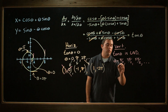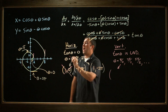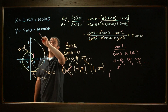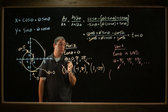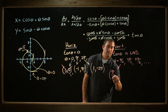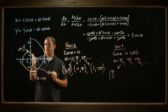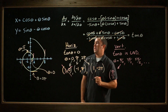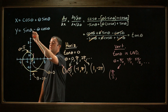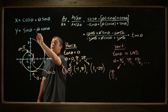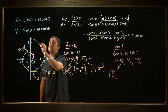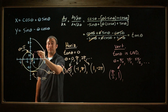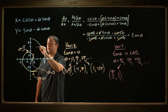Plugging in theta equals pi over 2 into x: cosine(π/2) is 0, plus pi over 2 times sine(π/2), which is 1, gives x equals pi over 2. And this first vertical tangency could happen at about pi over 2. Plugging pi over 2 into y: sine(π/2) is 1, minus pi over 2 times cosine(π/2), which is 0, so y equals 1. This looks like my first point of vertical tangency, the first point where the tangent line is vertical.